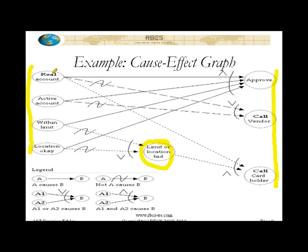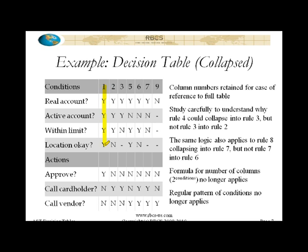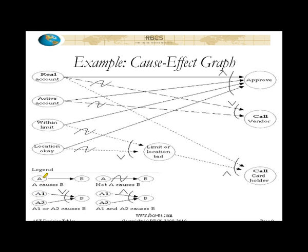For example, the first one: real account, active account, within limit, location okay — if all four of those things are true, we will approve the transaction. You can see that this is column one in the decision table — all four are true, we approve. This is shown using the logical operator 'A causes B' combined with the AND logical operator, where A1 and A2 both have to be true for B to be true. The upward-pointing carrot shape that looks like the letter A is the AND operator. So real account AND active account AND within limit AND location okay cause approve to occur.